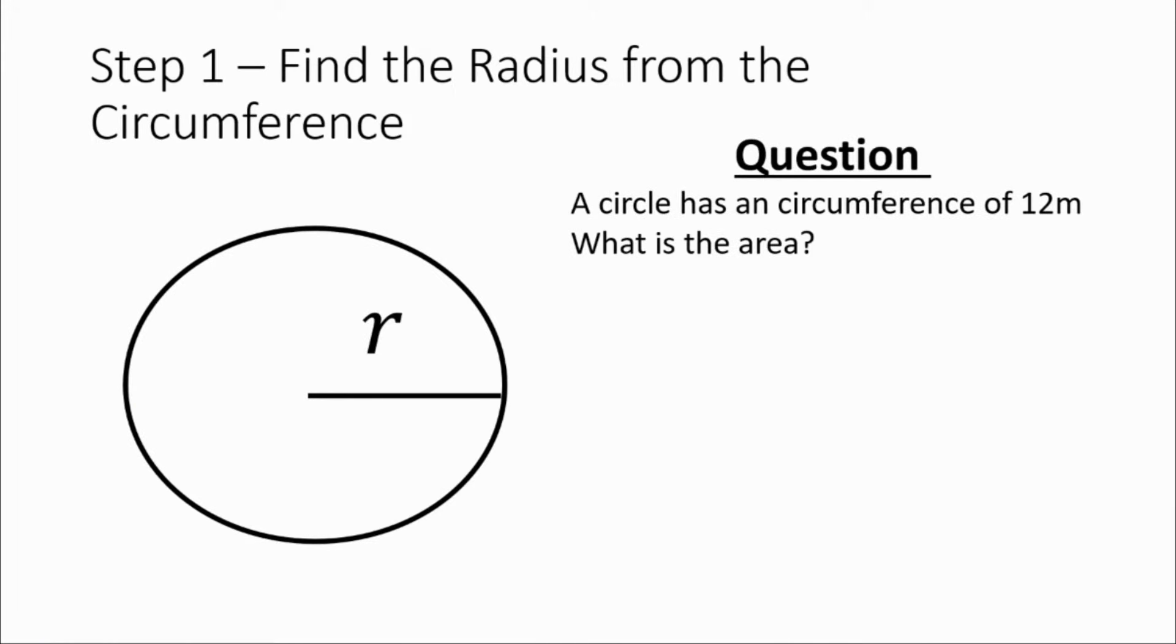The first step is we're going to find the radius from the circumference. There is a formula that links the radius and the circumference together, and that is that the circumference is equal to 2π times the radius.